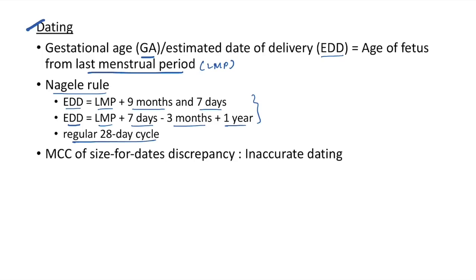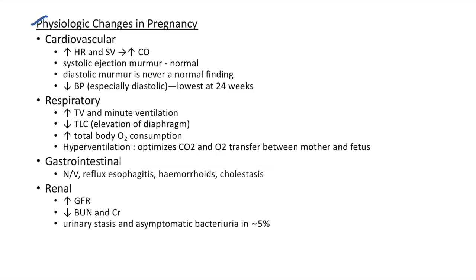Now let us see about physiologic changes in pregnancy. In the cardiovascular system, there is an increase in heart rate and stroke volume leading to increased cardiac output. There will be a systolic ejection murmur, which is normal in pregnancy. A diastolic murmur is never a normal finding in pregnancy. There will be a decrease in blood pressure, especially diastolic blood pressure, which will be lowest at around 24 weeks.